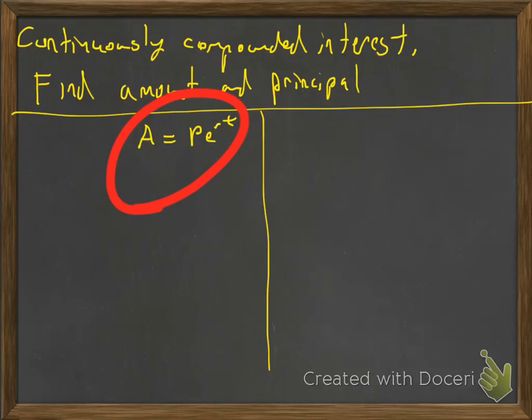So this right here, that's all for A. You just plug in what you know so you'll need to know the principal, the rate, and the time. That'll be given to you in the problem.